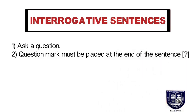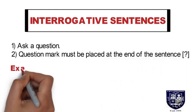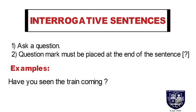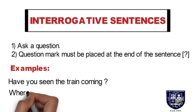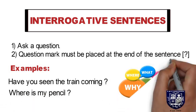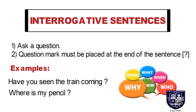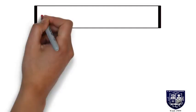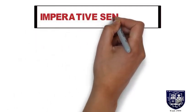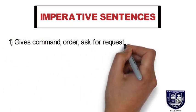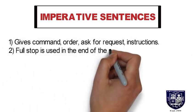The second sentence type is the interrogative sentence. Under this, it asks a question and a question mark is placed at the end of the sentence. For example: 'Have you seen the train coming?' or 'Where is my pencil?' Questions using words like where, what, why, how, when, or who are asked in interrogative sentences.